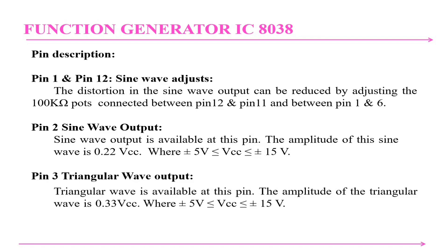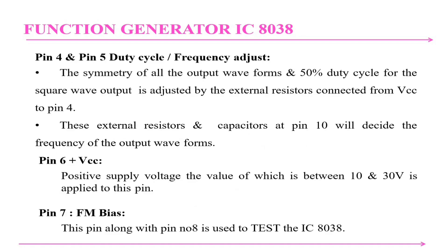Looking at pin 2, the sine wave output provides an amplitude of 0.2 × VCC, where VCC ranges from ±5 V to ±15 V. Pin 3 is the triangular wave output, and its amplitude is 0.33 × VCC, where VCC ranges from ±5 V to ±15 V. Pins 4 and 5 represent the duty cycle and frequency adjust.